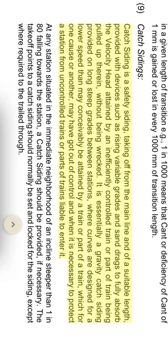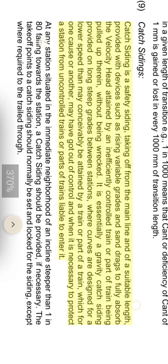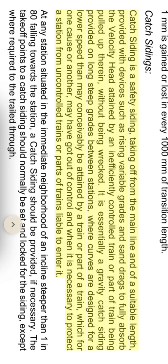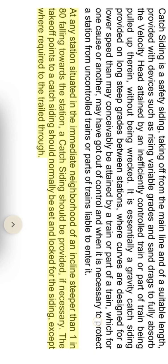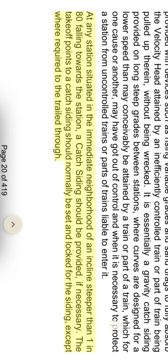Catch siding is provided where curves are designed for a lower speed than may conceivably be attained by a train or part of a train which, for one cause or another, may have got out of control, and when it is necessary to protect a station from uncontrolled trains. At any station situated in the immediate neighbourhood of an incline steeper than 1 in 80 falling towards the station, a catch siding should be provided if necessary. The take-off points to a catch siding should normally be set and locked for the siding, except where required to trail through.